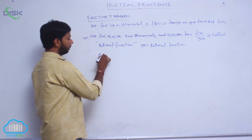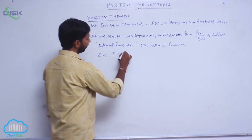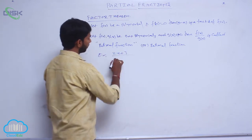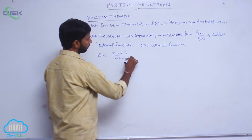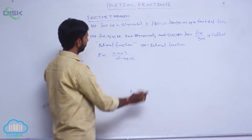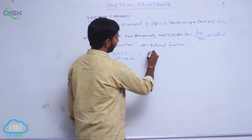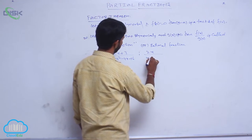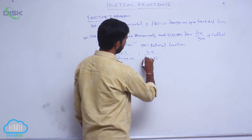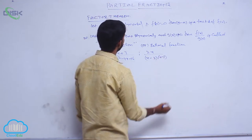Some examples are: 2x plus 3 by x squared minus 4x plus 6, or 2x by x minus 2 into x minus 3.